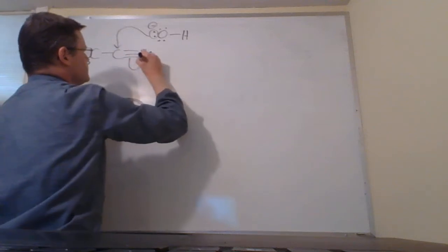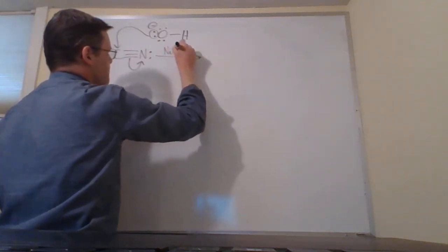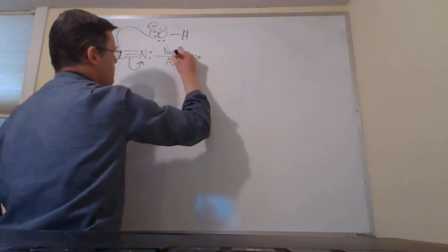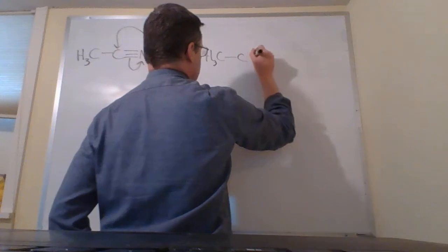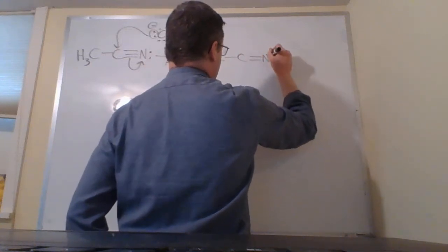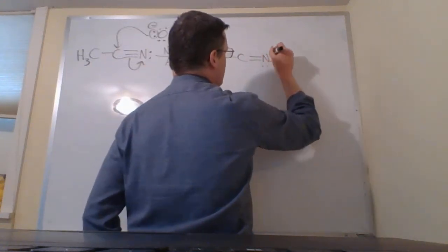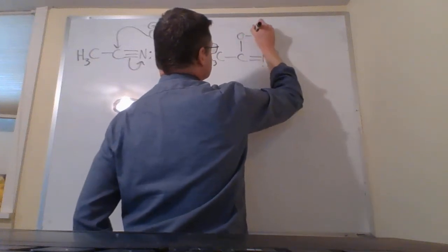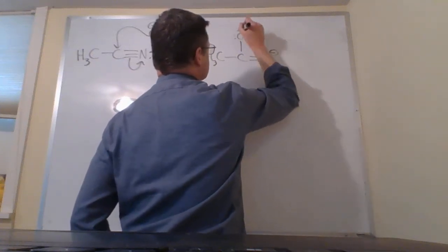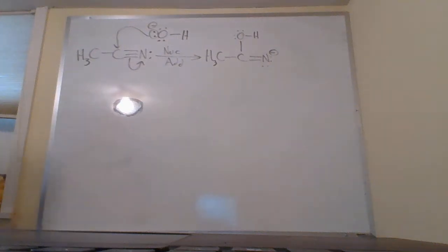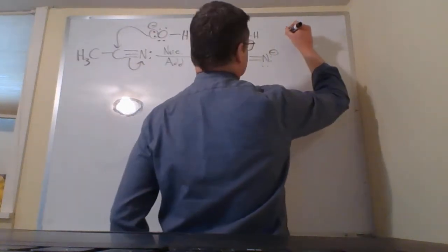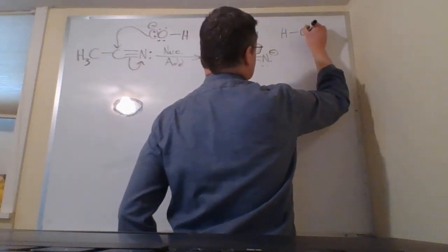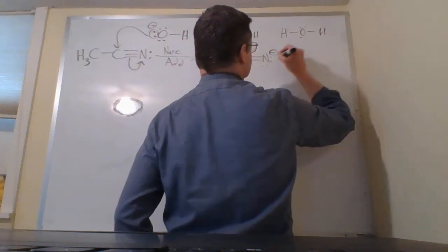The first thing I'm going to do is react that with hydroxide. This is a nucleophilic addition step, and what that yields is this. We've got a negative formal charge on that nitrogen, and so what we're going to do next is a proton transfer. We're going to protonate that nitrogen.